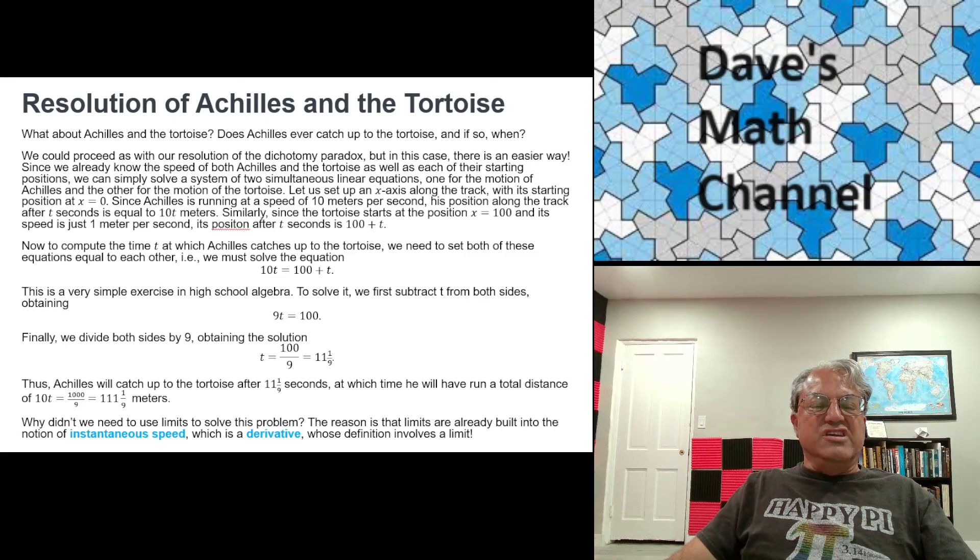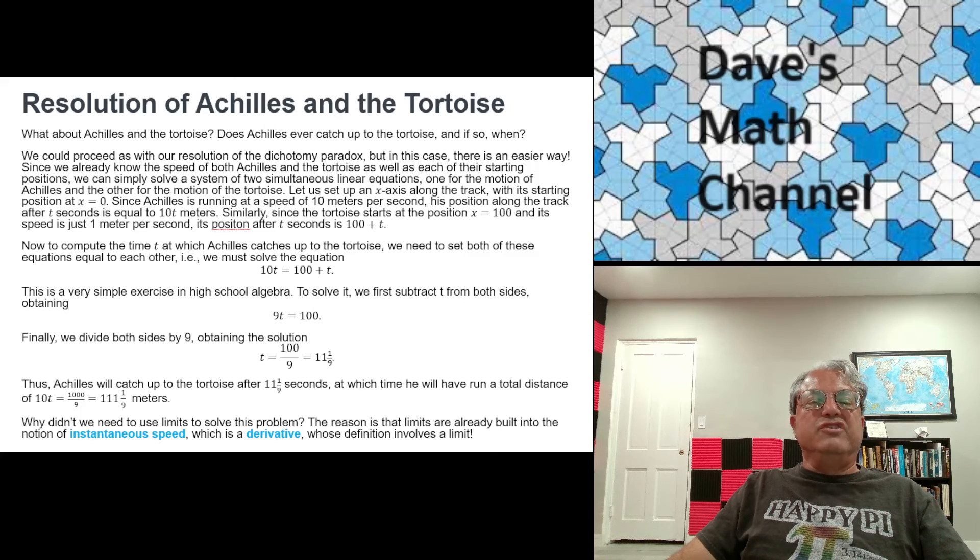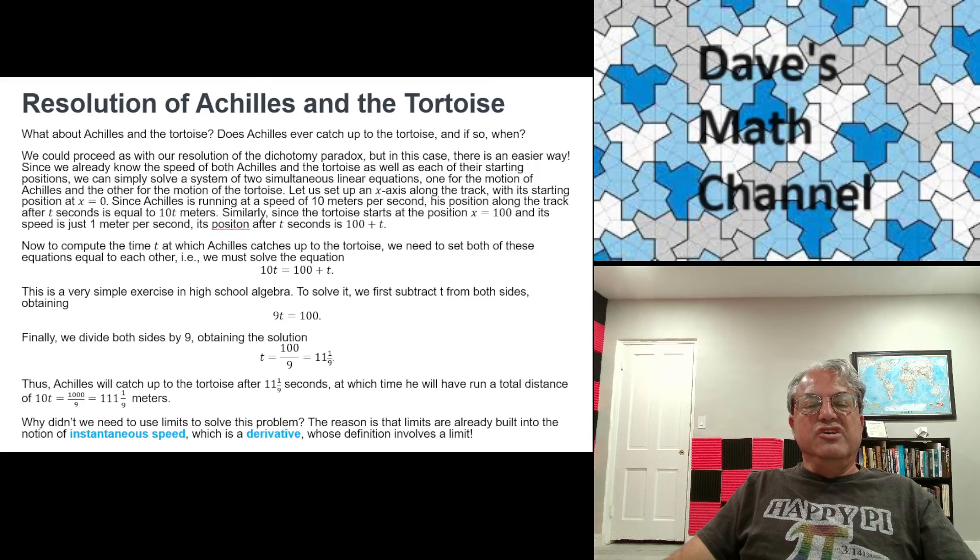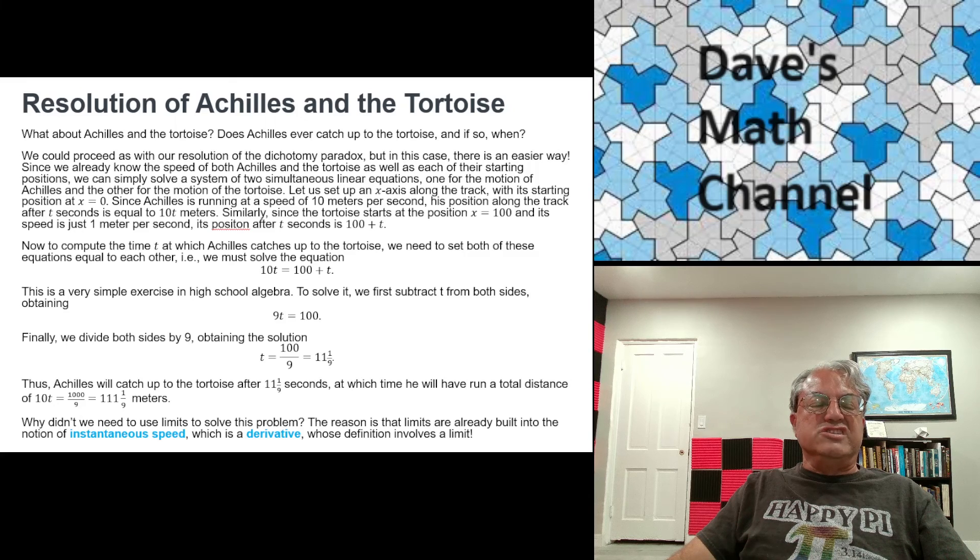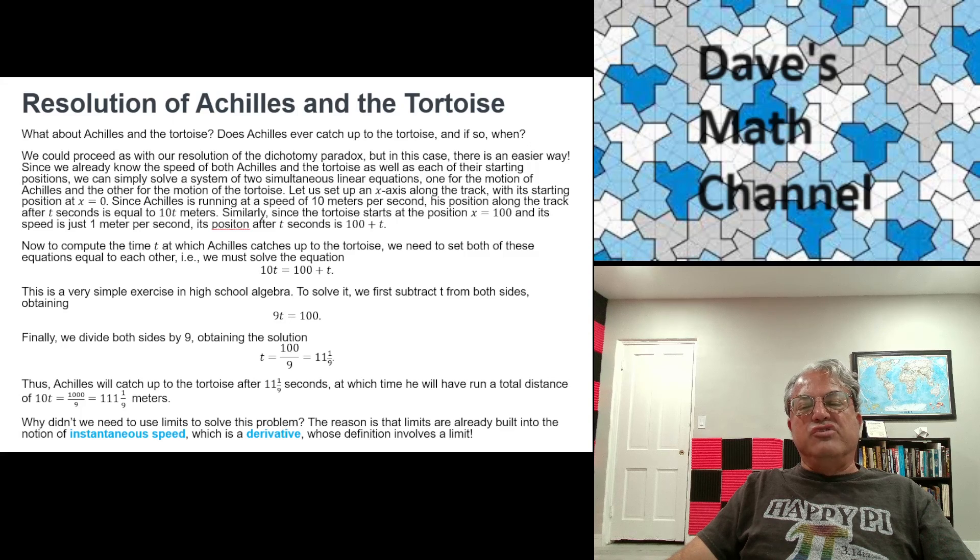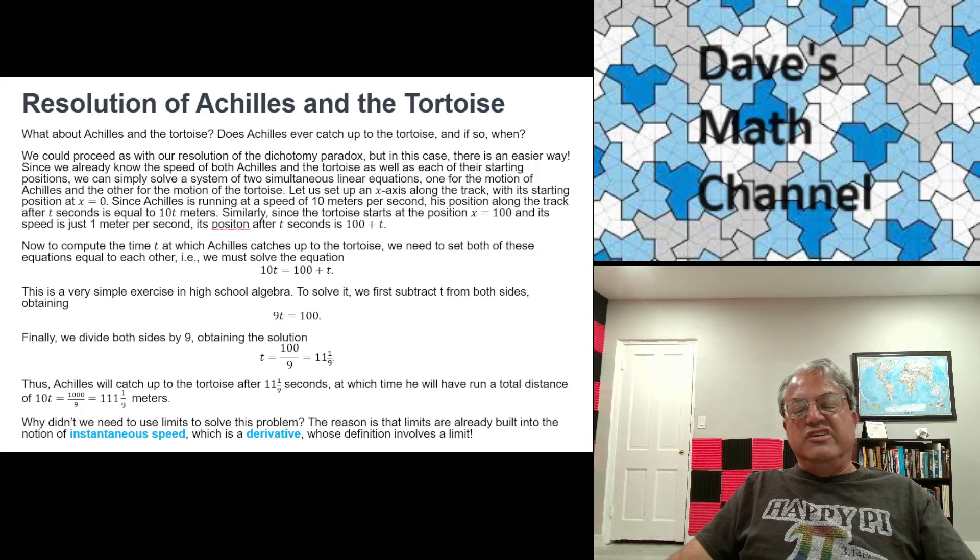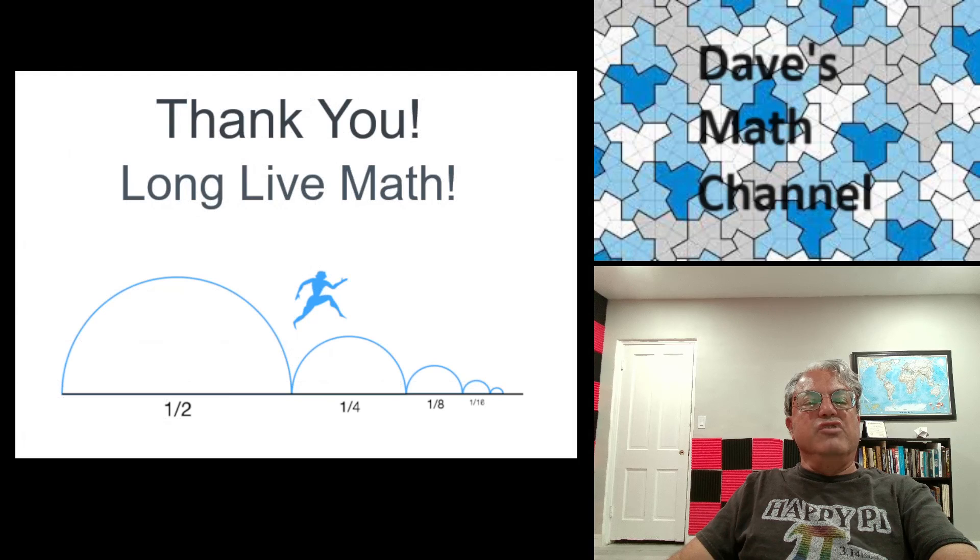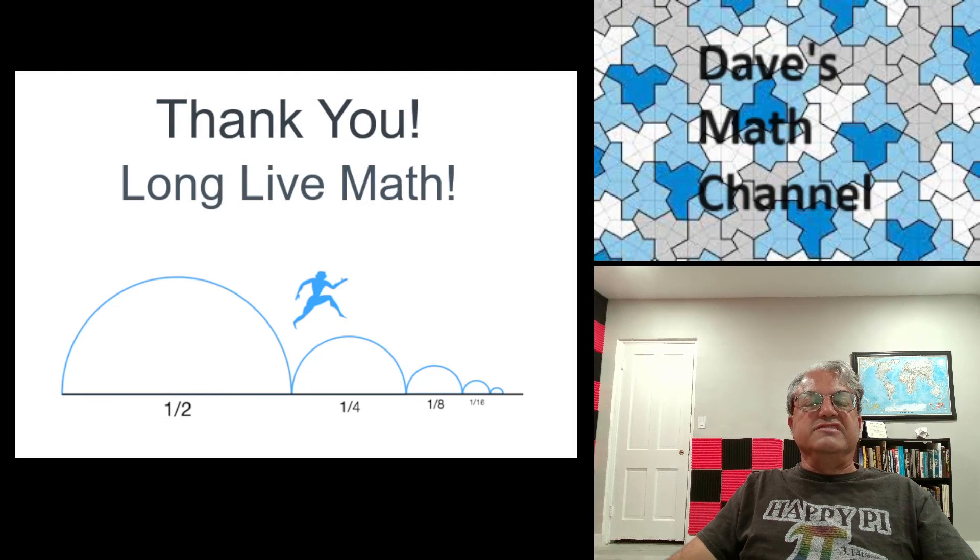Pretty easy. And like I said, the key concept that was missing is the concept of a limit. And I guess it's kind of unfortunate that the ancient Greeks didn't come up with a concept of a limit. Because if they did, they probably would have invented calculus. Came pretty close. I think Archimedes, maybe I'll do this in another video, but Archimedes came very close to coming up with a concept of a limit. He did come up with a method for estimating the value of pi. It was called the method of exhaustion. And you can actually think of that process as a limit. Maybe I'll do that next time. But anyway, that concludes my talk for today. So thank you for watching. Long live math. And I'll see you guys next time. Bye.